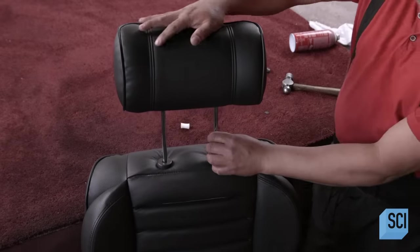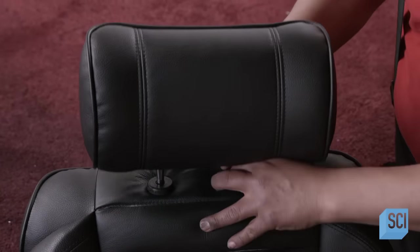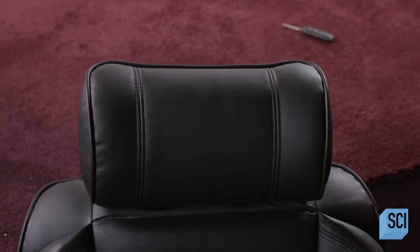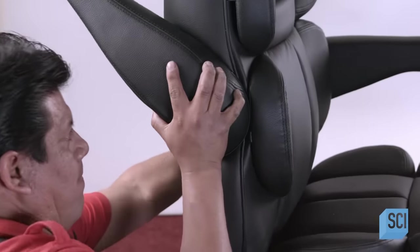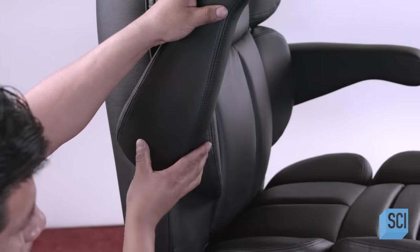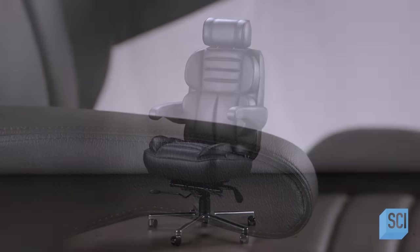He equips the back of the office chair with an automobile-style headrest. The prongs fit into the brackets in the chair frame. Finally, he locks the armrests into the frame. This office chair is now ready to make someone's desk job a lot more comfortable.